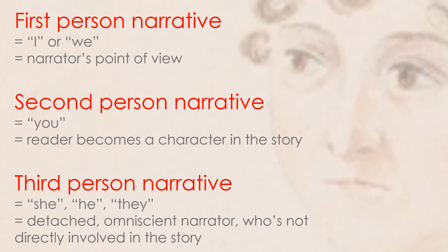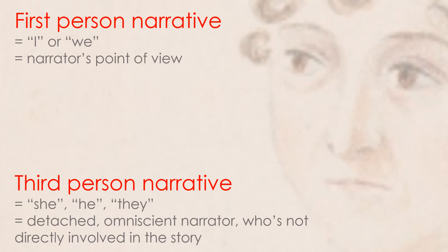Going back then to free indirect discourse: it's a kind of blending or mixture of the first person and the third person. You remove the detached perspective of a traditional third person narrative, and it becomes much less clear and distinct — more blended between the two positions. It's not always clear whose perspective is being presented; it might be narrative fact, or it might be a character's own opinion.